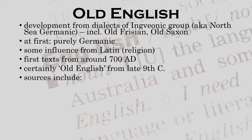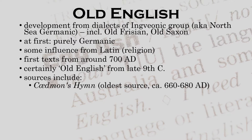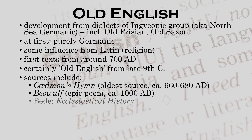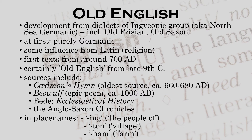Among the sources of Old English, we should mention at least Caedmon's Hymn, written sometime between 660 and 680 AD, and generally recognized as the oldest source of Old English. Beowulf, an epic poem dating back to around 1000 AD. The Ecclesiastical History, written by Bede — often referred to as the Venerable Bede — and the so-called Anglo-Saxon Chronicles, basically records of events kept in a number of monasteries around the country.